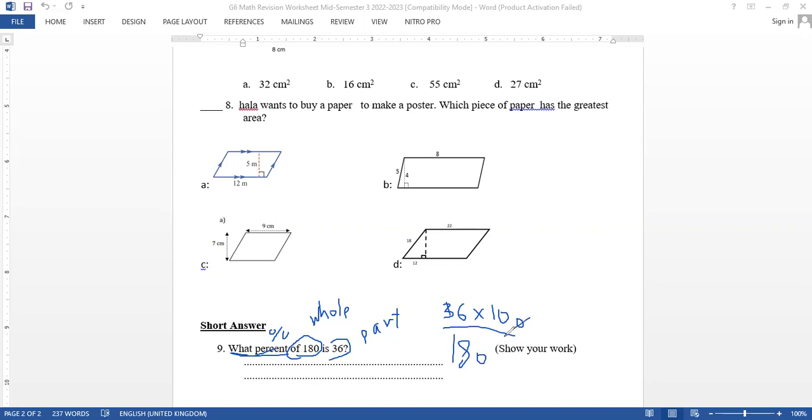Simplify: 10 multiply 36 is 360, over 18. 360 divided by 18 equals 20. So the answer is 20 percent.